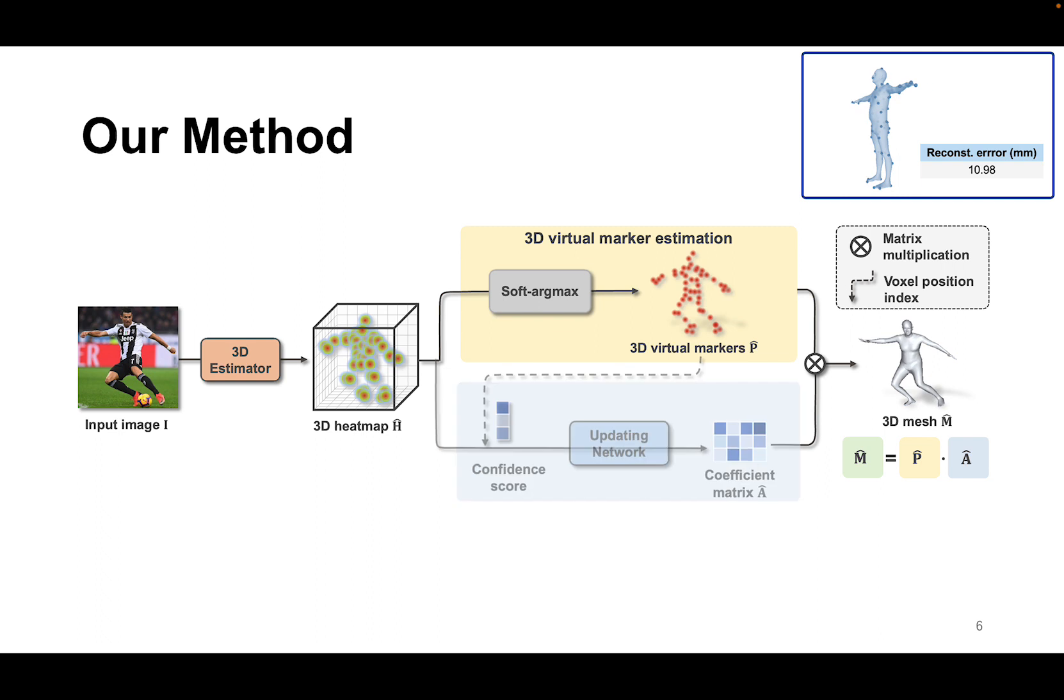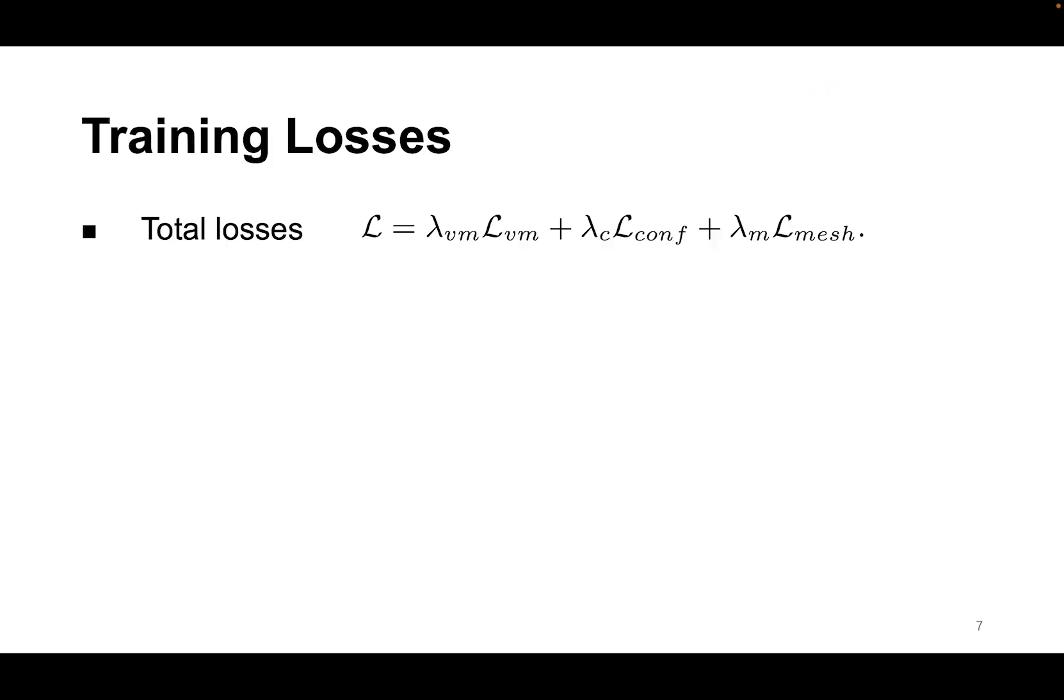Therefore, our solution is to rely more on those accurately detected markers. To that end, we propose to update the coefficient matrix based on the estimation confidence scores of the markers. We train the whole network end-to-end in a supervised way.